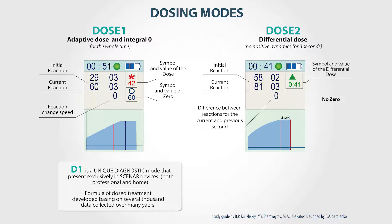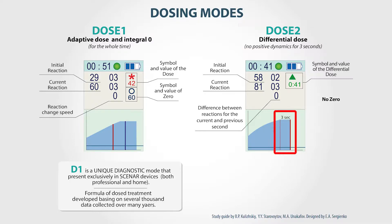Dose 2. Differential dose. The difference from D1 is that here the dose signal indicates the absence of reaction change during 3 seconds. That means that the dose appears if the active dialogue between the device and the skin is over, and there is no dynamics for 3 seconds. In this mode, the symbol of dose is the green triangle.